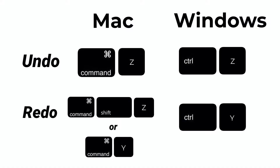To undo in Kapwing, just hit Command and Z at the same time, and to redo, it's Command-Shift-Z. If you're using Windows, instead of Command, you'll hit the Control button.